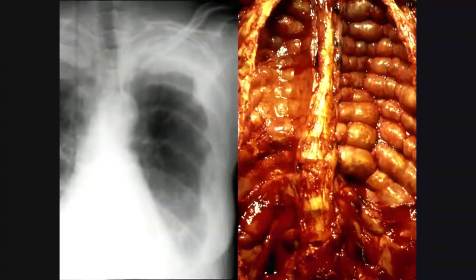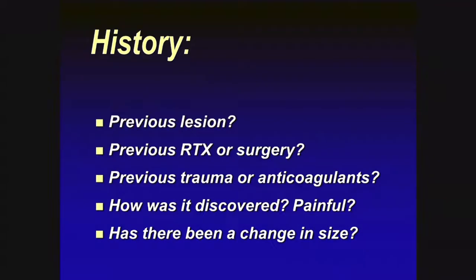A nice example of neurofibromatosis illustrates that patients are often very much aware of their conditions and will tell you about them if you take the time to ask. Key history questions include: any previous lesion or important medical history, history of radiation therapy or surgery, previous trauma, anticoagulant use, how the mass was discovered, whether it is a slowly growing painless mass — very typical of soft tissue sarcoma — whether there has been a change in size, and whether it enlarges with exercise, which might suggest a vascular lesion.